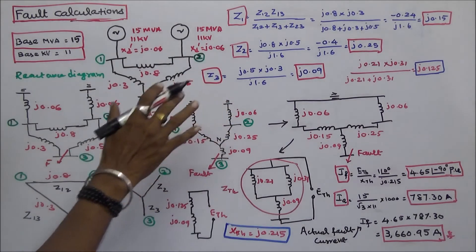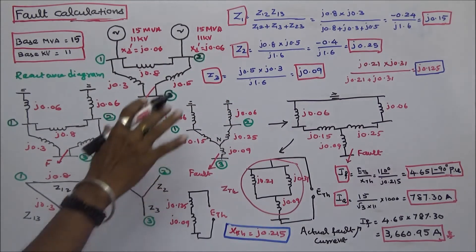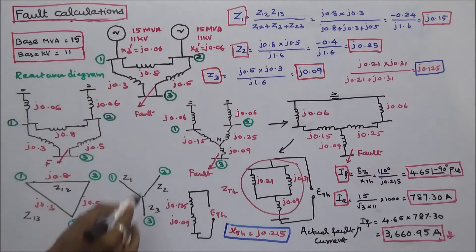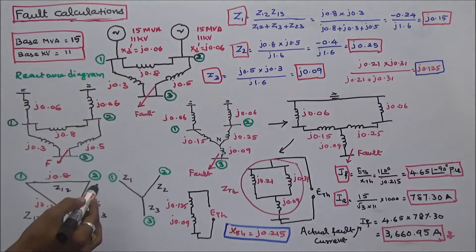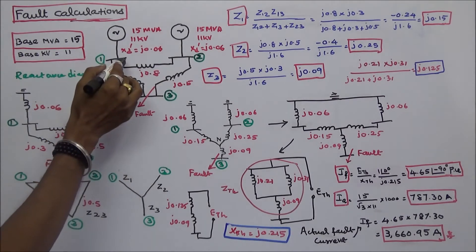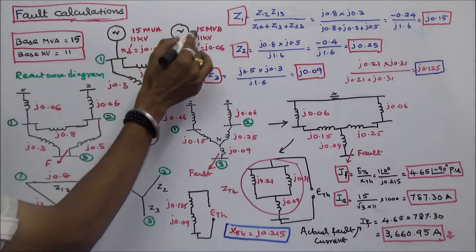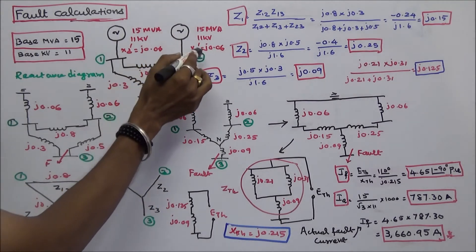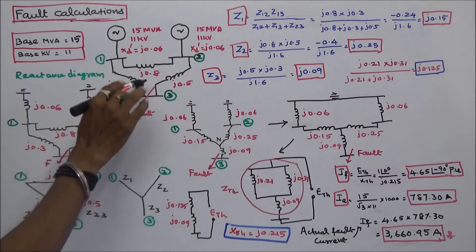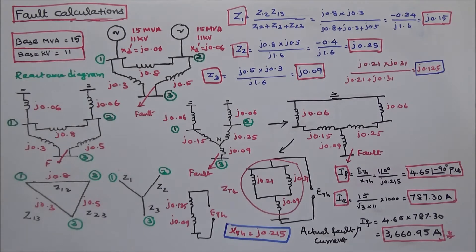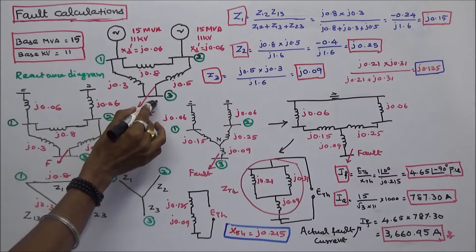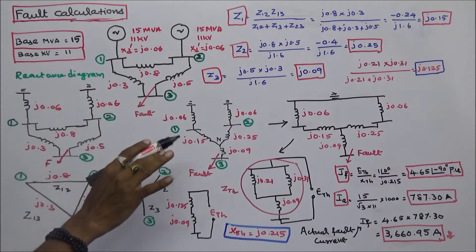This is the given network. This network consists of two generators and three bus bars. Generator 1 rating is 15 MVA, 11 kV, and subtransient reactance is J0.06. Generator 2 is 15 MVA, 11 kV, and subtransient reactance is J0.06. These are all the branch reactances, all in per unit with the base MVA of 15. The question is: if a fault occurs at bus 3, calculate the per unit fault current and actual fault current.